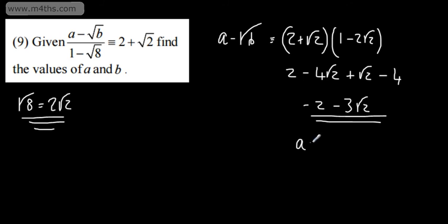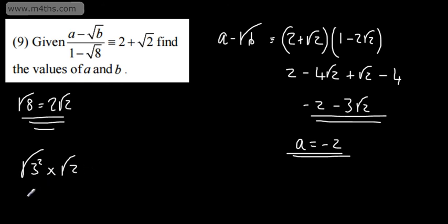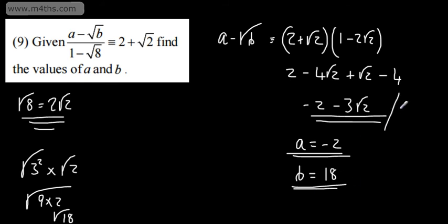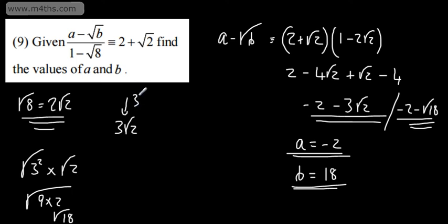We've certainly got our value of a — a is going to be negative 2. What we need to do is find b. So I'm going to reverse this particular process: instead of 3 root 2, I'm going to write the square root of 3 squared times by root 2. So this is going to give us 9 times by 2, which is going to give us the root of 18. So b is actually going to be 18. An alternative way to see this: if you want to put it back under the root, you square this number and then multiply it by this one, and that will give us the value that needs to go under the root.